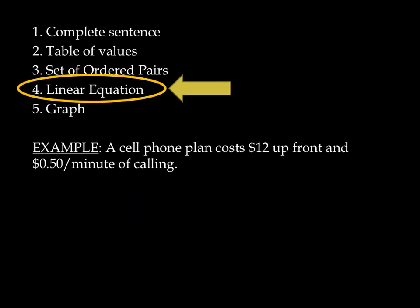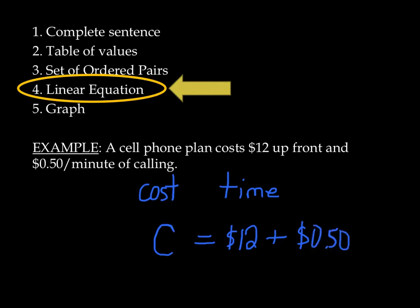Next we've got linear equations. So this can be rewritten as a linear equation. We are dealing with the cost and with time. And we want to relate the two together. So the total cost, which we'll call C, must equal, well, it's going to equal $12 at first. And then we add something to it, right? We add $0.50 times, we'll call it T, for the number of minutes.